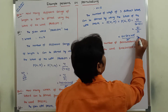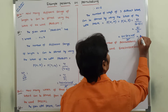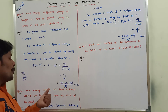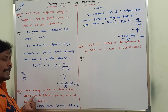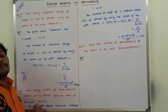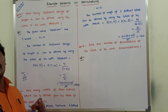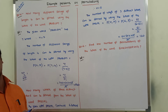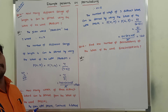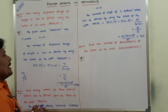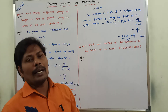Three factorial cancels. So that is equal to 6 into 5, that is 30; 30 into 4, that is 120. So 120 ways are there to form 3 distinct letter words from the letters of the given word PASCAL.